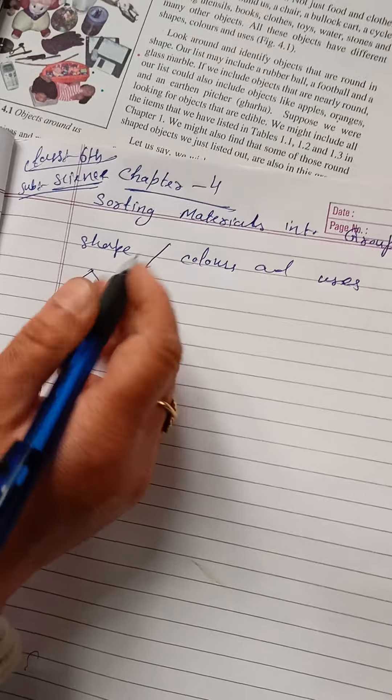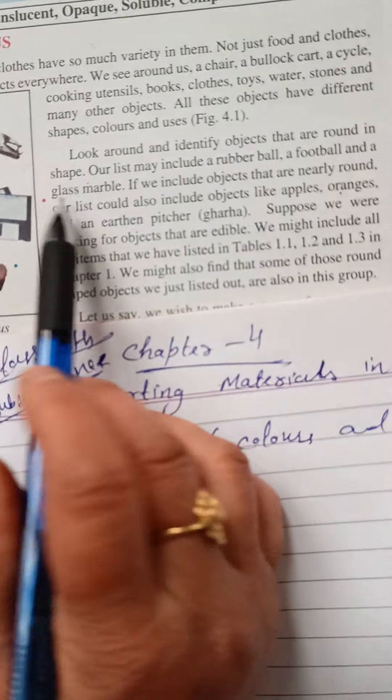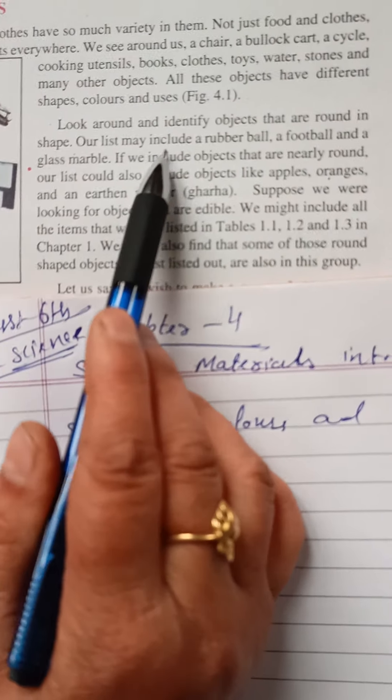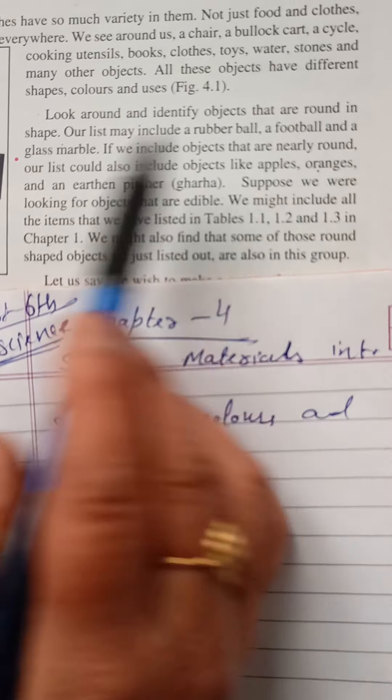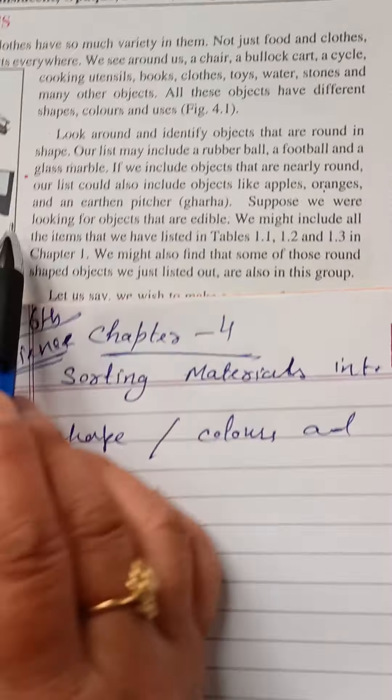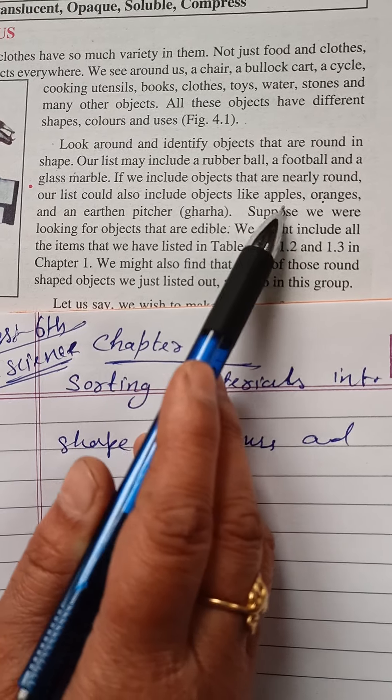Look around and identify objects that are round in shape. Our list may include a rubber ball, football, glass marble. If we include objects that are nearly round, our list could also include objects like apples and oranges.